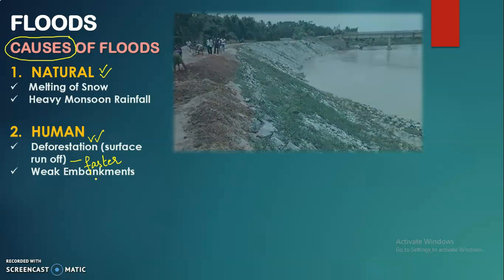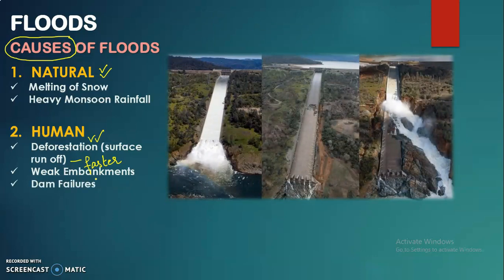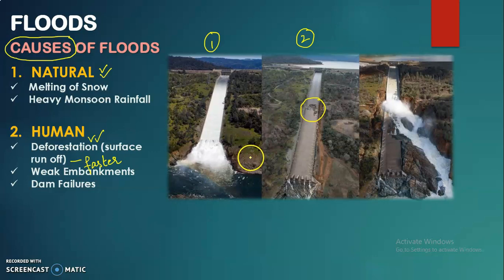The third human factor is dam failure. When a dam is not properly maintained or has a fault, a breakage gets created. As shown in the pictures, once there is damage or failure in the dam, the stored water diverts, changes path, comes out, and affects surrounding areas. These are the natural and human factors behind the causes of floods.